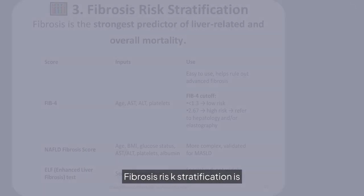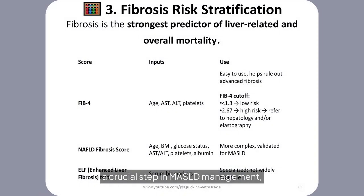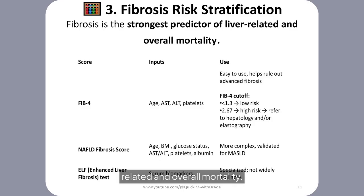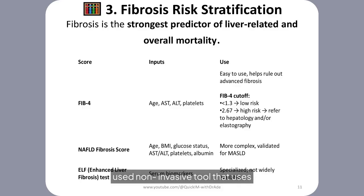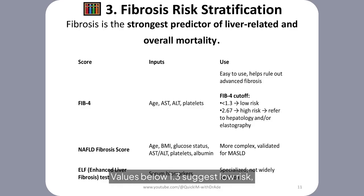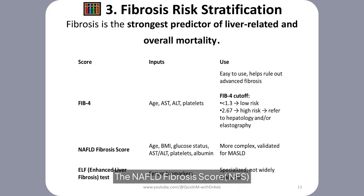Fibrosis risk stratification is a crucial step in MASLD management, as the degree of fibrosis is the strongest predictor of liver-related and overall mortality. The FIB-4 index is a simple, widely used, non-invasive tool that uses age, AST, ALT, and platelet count to estimate fibrosis risk. Values below 1.3 suggest low risk, values above 2.67 indicate high risk, and intermediate scores require further assessment.